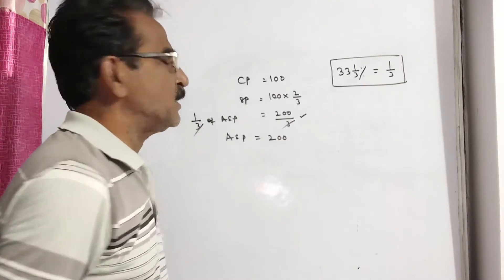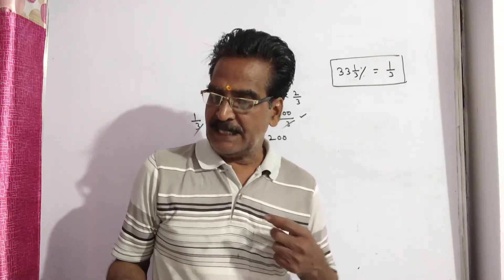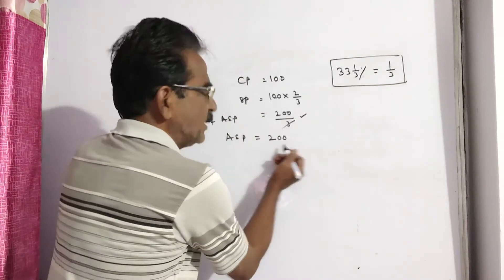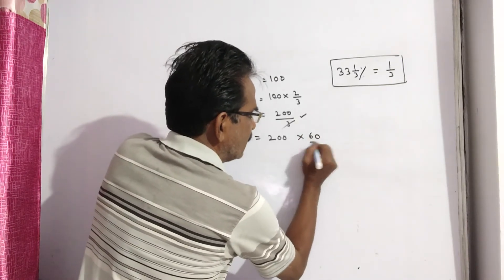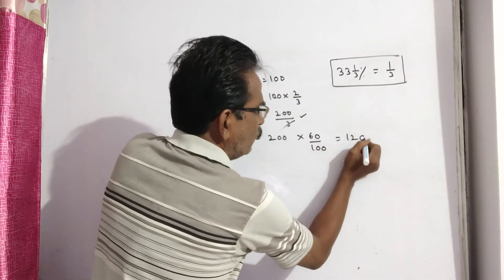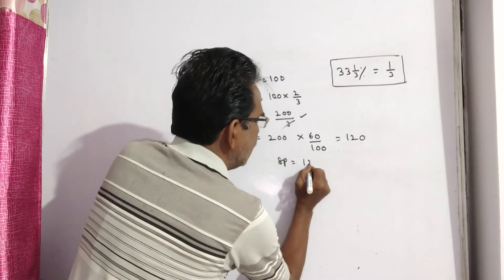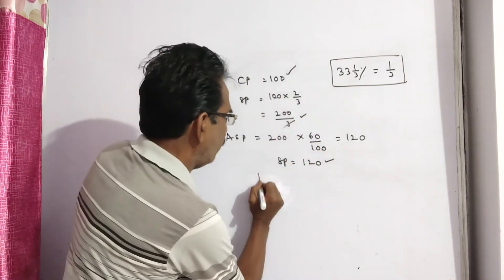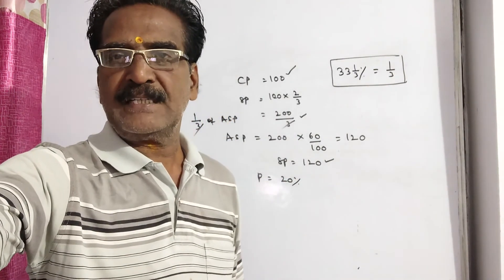Actual selling price is rupees 200. Now, the question is: what is the profit percent when it is sold at 60% of the actual selling price? Actual selling price is 200, and 60% of this is equal to 120. So selling price is 120, cost price is 100, so profit is equal to 20%.